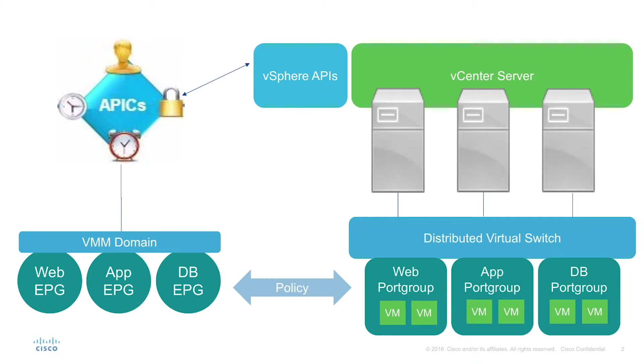I'm using VMware as an example here, but we can do the same thing with KVM and Hyper-V. Imagine instead of vCenter, you have an SCVMM server, and instead of creating port groups, we're creating networks.